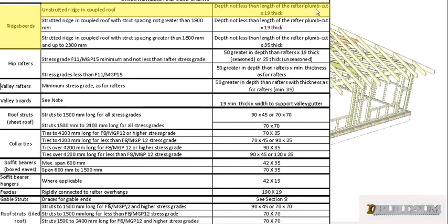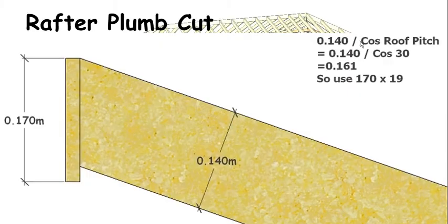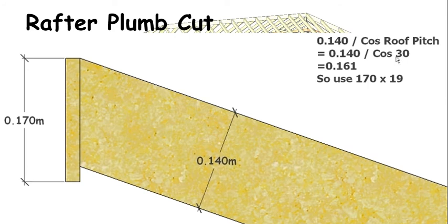So we need to know what our rafter plumb cut is. If you look at our rafter, we worked out in a previous video that our rafter is going to be 140 mm deep. So we need to work out what the length of this plumb cut is. The easiest way to do that is to divide 140 by the cosine of the roof pitch, and the roof pitch in this case is 30 degrees, so 140 divided by cos 30° gives us 161 mm.